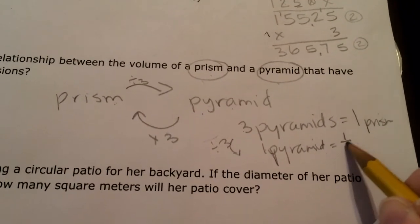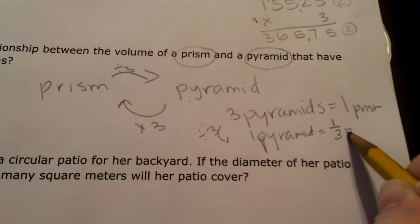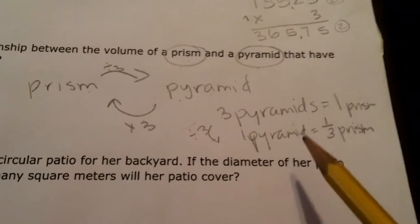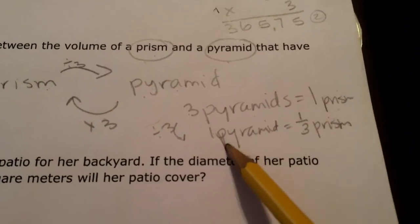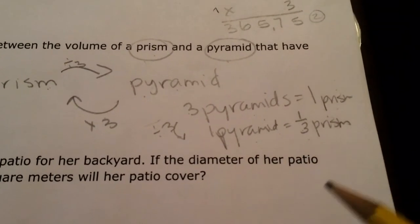written as a fraction, is one third prism. So my relationship is three pyramids equals one prism, or one pyramid is a third of a prism.